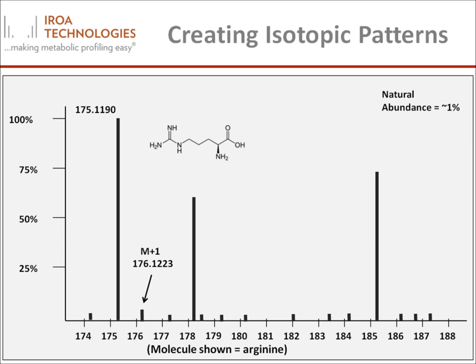Almost all living things contain two isotopes of carbon: carbon-12 and carbon-13. Generally, the natural abundance of carbon is approximately 98.9% C12 and 1.1% C13. Consider the molecule arginine shown here. This molecule has 6 carbons, 14 hydrogens, 4 nitrogens, and 2 oxygens. Given the natural abundance of carbon, each of the 6 carbons has a probability of 98.9% that it is a C12 and a 1.1% probability it is a C13.